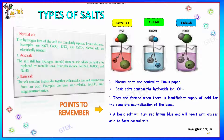Your basic salt contains hydroxides together with metallic ions and negative ions from an acid. The typical examples are basic zinc chloride and basic magnesium chloride. Normal salts are neutral to litmus paper, basic salts contain hydroxide ions, and acid salts contain hydrogen atoms.